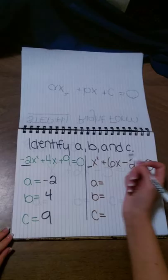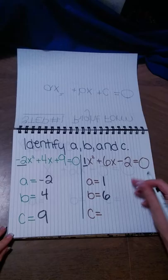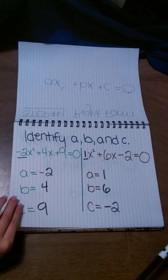With our second example, if we look for our a, it will be in front of the x squared, and there's nothing in front of the x squared, so there's an implied one. So our a would be one. Then our b in front of the x would be six. And our c would be negative two.